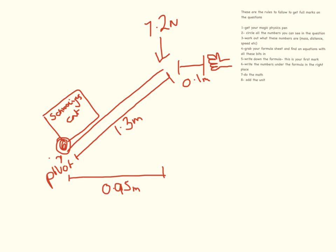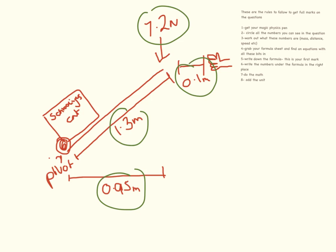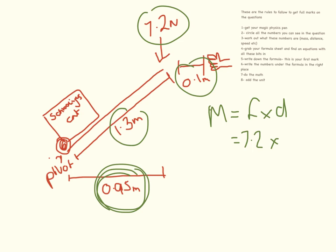Again, there are lots of numbers on here, but the examiners aren't doing it deliberately to confuse you — they're doing it to see whether you know your physics well enough. Moment equals force times distance. The force is 7.2 Newtons. The correct distance to use is the perpendicular distance from the pivot. If you're confused about how to find the perpendicular distance, draw a right-angled triangle from the direction of the force. So 7.2 times 0.95 equals 6.84 Newton meters.